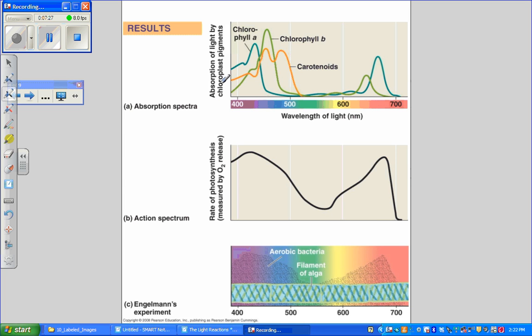Here we're looking at figure 10.9 from our book. At the top we see the absorption spectra. The absorption spectra shows the wavelengths of light best absorbed by each of the three types of pigment.